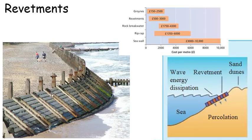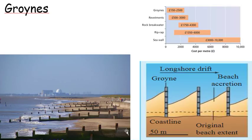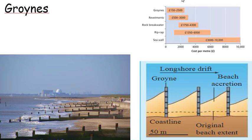Next one is groins. They are stone or timber fences that run at 90 degrees, or perpendicular, to the coastline. They tend to be spaced along the beach — on average between 50 and 100 metres apart. What do they do? They trap sediment from longshore drift and build up a higher and wider beach, which can then act as a buffer and physical protection against breaking waves. Cost: between £150 and £2,500 per square metre.